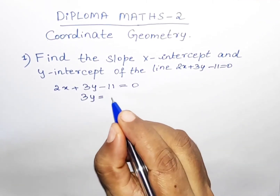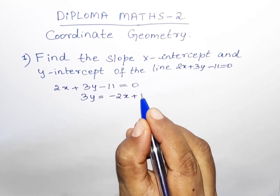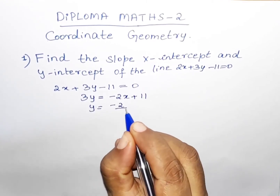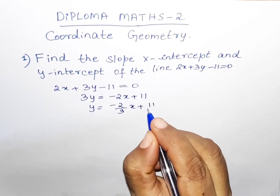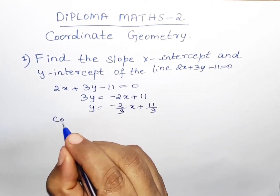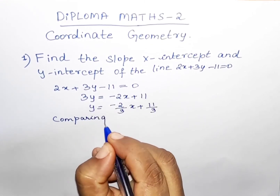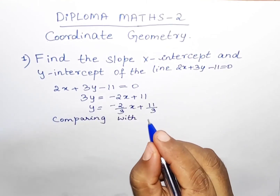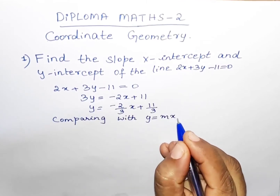Now, 3y equals: 2x goes to the right-hand side and becomes -2x. Similarly, -11 goes to the right-hand side and becomes +11. So y = (-2/3)x + 11/3, after shifting the 3 to the right-hand side. Now let us compare this equation with the standard equation y = mx + c.